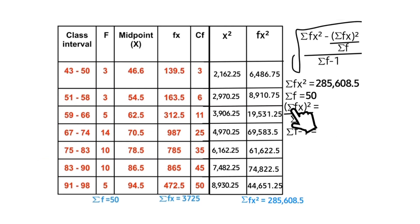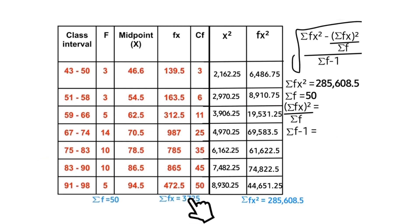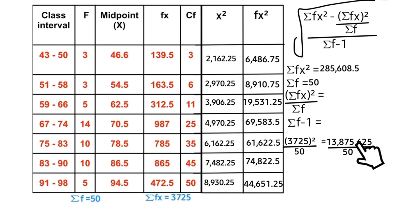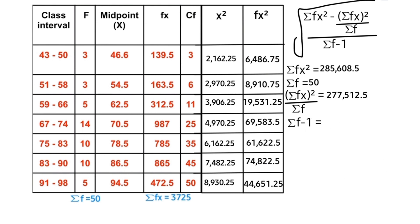The summation fx value we got is 3725. 3725² gives us 13875625, divided by summation f which is 50.